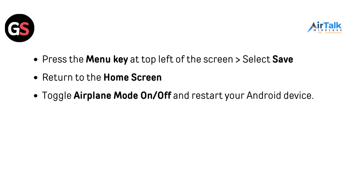Press the menu key at the top left of the screen and select Save. Return to the home screen. Toggle Airplane mode on and off and restart your Android device.